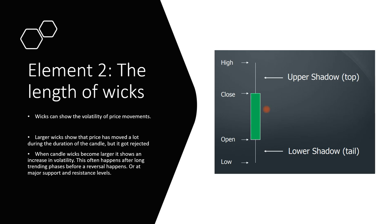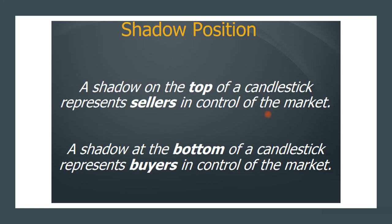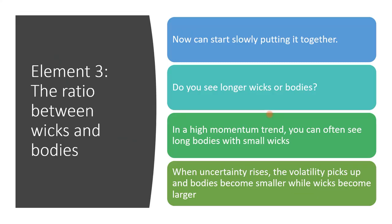The most important part is the wicks or shadows — some people call them tops and tails, I call them wicks. The length of that wick tells you a lot and can define where you'd put your stop loss and take profit. Larger wicks show that prices moved a lot during the candle but got rejected. When wicks become larger it shows increased volatility, which often happens after long trending phases before a reversal or at a major support or resistance level. A shadow on top represents sellers in control; a shadow on the bottom represents buyers in control.